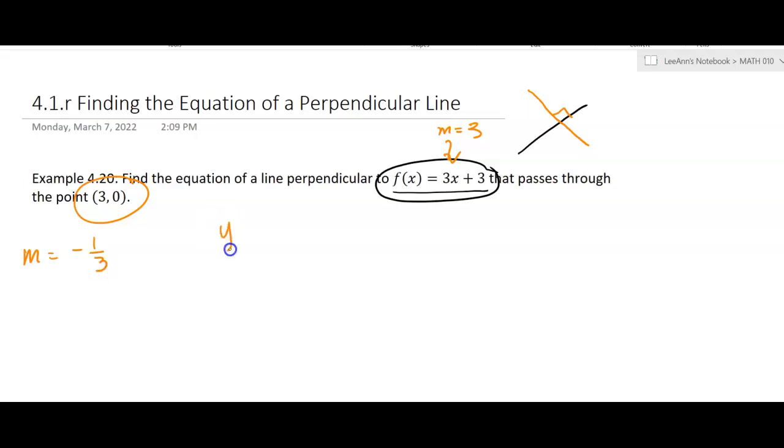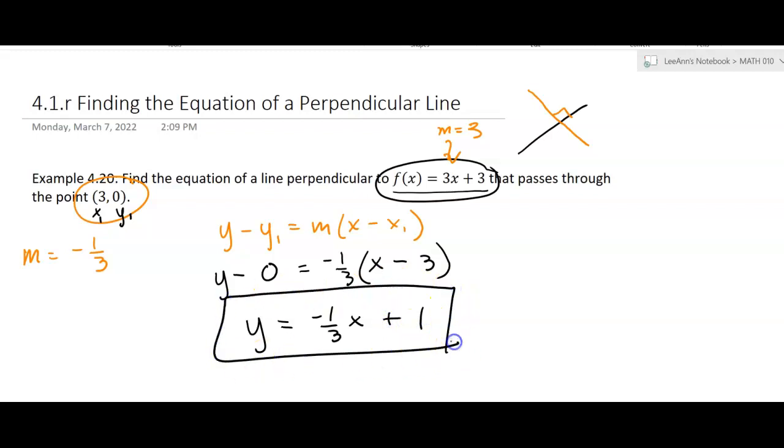So I'm going to use the point slope formula. And we're going to plug everything in that we know. y minus 0, because this is y sub 1 and x sub 1. And our slope is negative 1 third x minus 3. So we get y equals negative 1 third x plus 1. So if we do the distributing there, that's what we get.